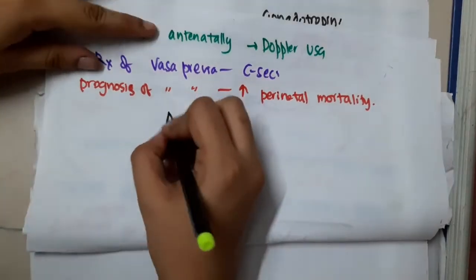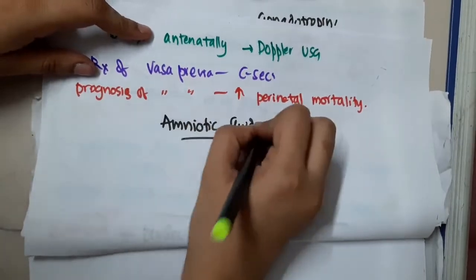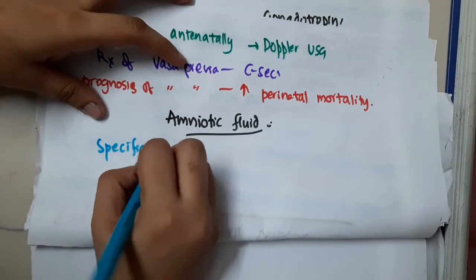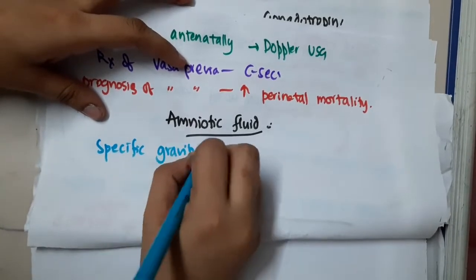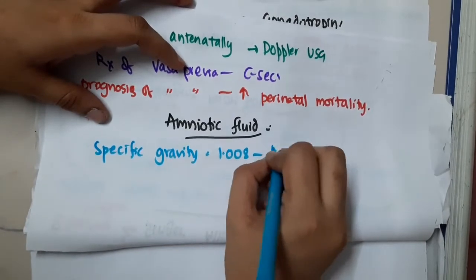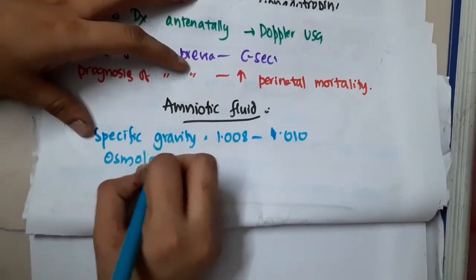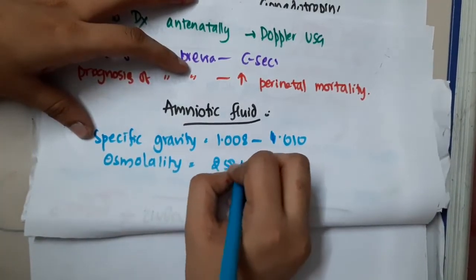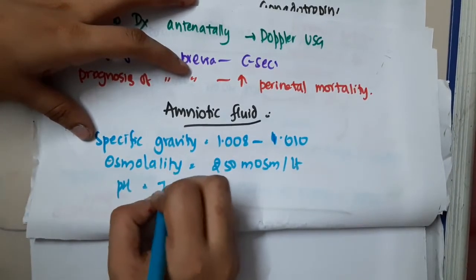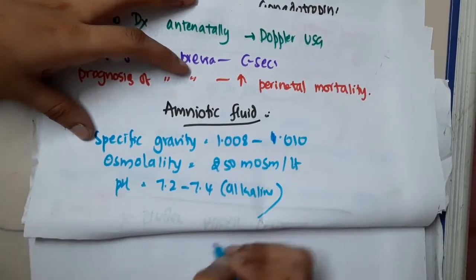Hello friends, let us now learn some important points about amniotic fluid. The specific gravity of amniotic fluid is 1.008 to 1.010. The osmolality of amniotic fluid is 250 milliosmoles per litre, and the pH of amniotic fluid is 7.2 to 7.4, that is alkaline in pH.